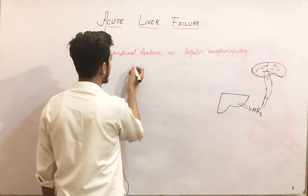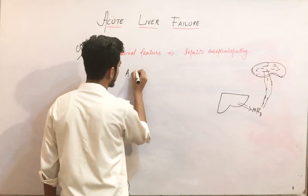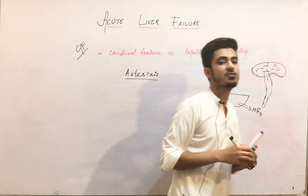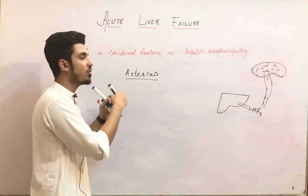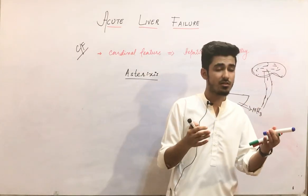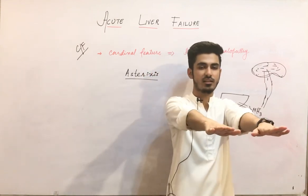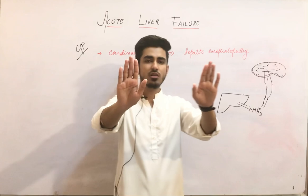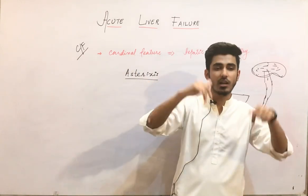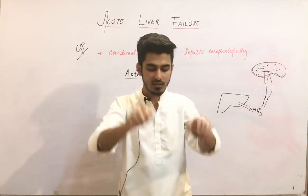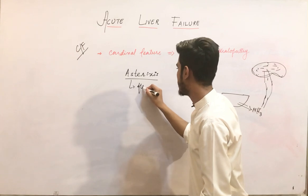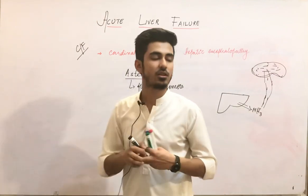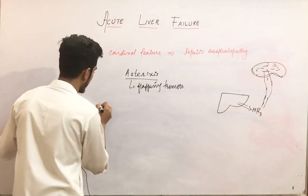Due to CNS dysfunction from hepatic encephalopathy, there is a sign called asterixis. To test this, you ask the patient to straighten and extend their hand, then pull it backward and release it. If the patient has CNS dysfunction due to hepatic failure, the hand will flap repeatedly. These are called flapping tremors, or asterixis.